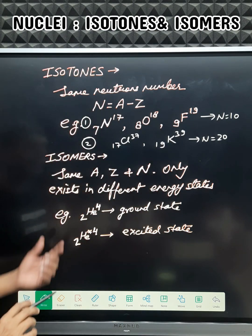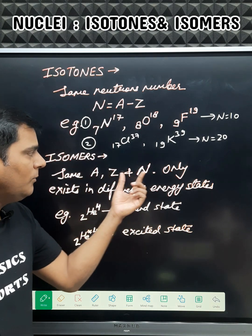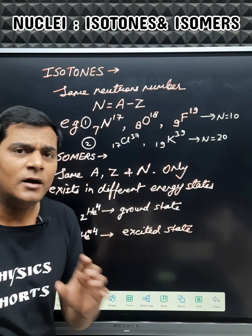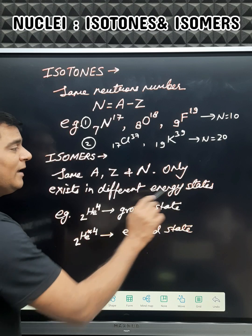Isomers are the nuclei having same number of mass number, atomic number and number of neutrons. They are only different by their different energy state.